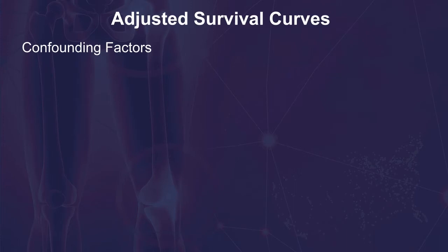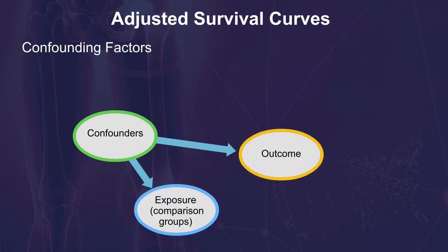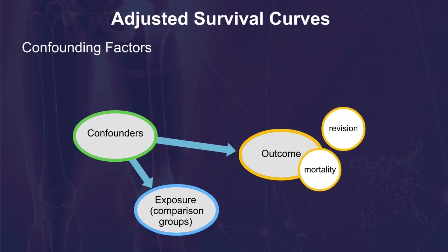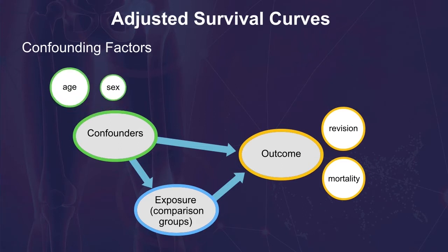Confounding factors are baseline variables that are associated with both the comparison group and the total joint arthroplasty outcome of interest, such as revision or mortality. It is important that confounding variables are measured prior to or at the time of exposure and not measured after the exposure. Common confounders in total joint arthroplasty research include patient characteristics such as age, sex, and comorbidities.